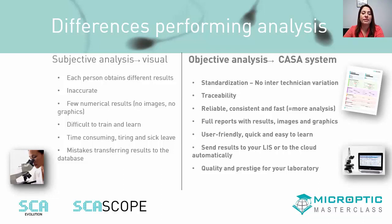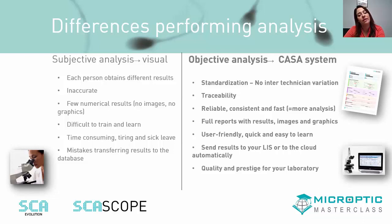To summarize, CASA systems have made improvements and are more accurate than the manual method, mainly for evaluating sperm according to the guidelines of the 6th edition of the WHO manual, including sperm velocities, their different kinematic movements, and hyperactivation.